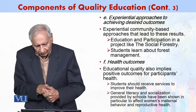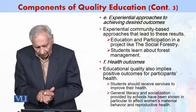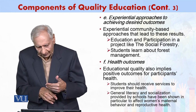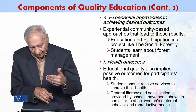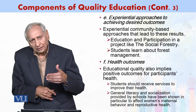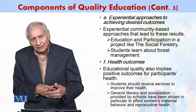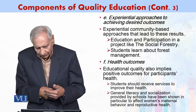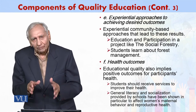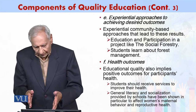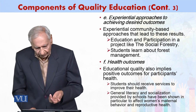Educational quality also implies positive outcomes for participants' health. Learning includes how individuals discipline themselves. This is not only about literacy — the three Rs — but about socialization that school provides, including total behavioral development. For example, how does education affect women's maternal behavior and reproductive health?